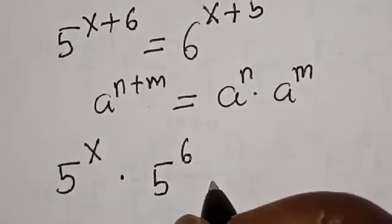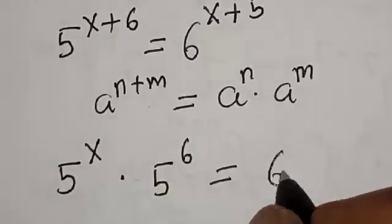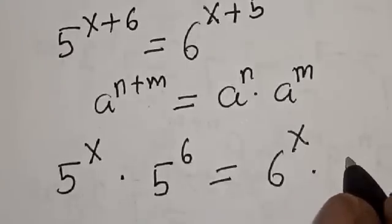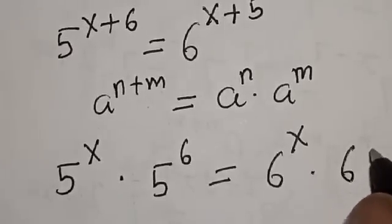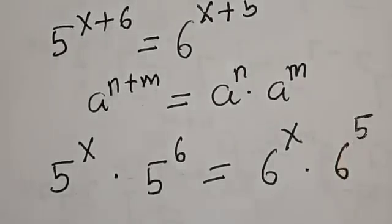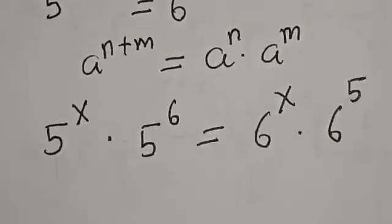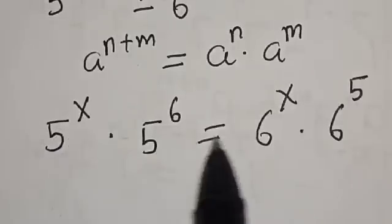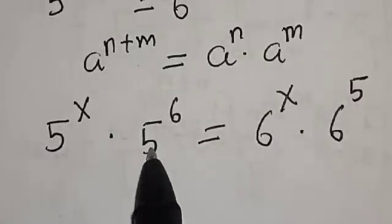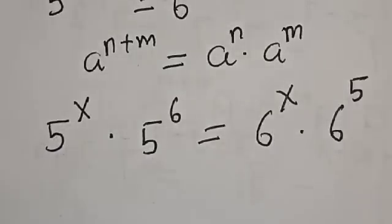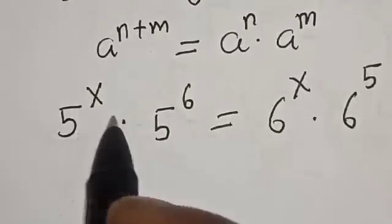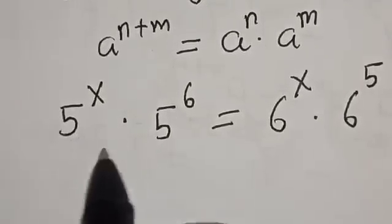...is equal to 6 raised to power s multiplied by 6 raised to power 5. We have 5 raised to power s and 6 raised to power s. This is 5 raised to power 6. Let's divide 5 raised to power s by 5 raised to power 6.